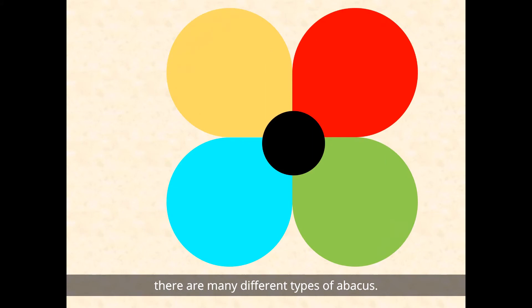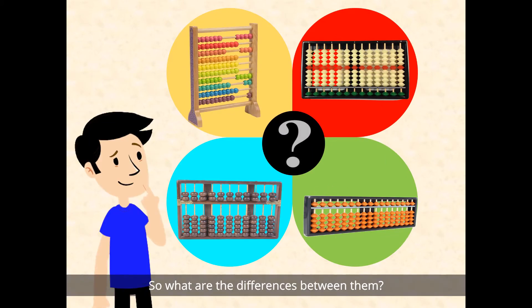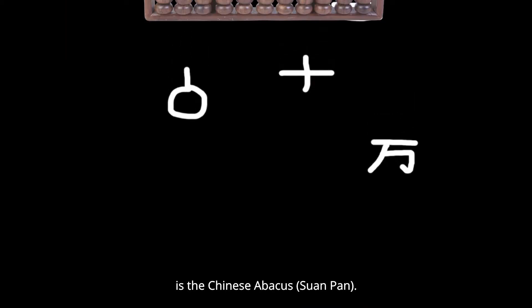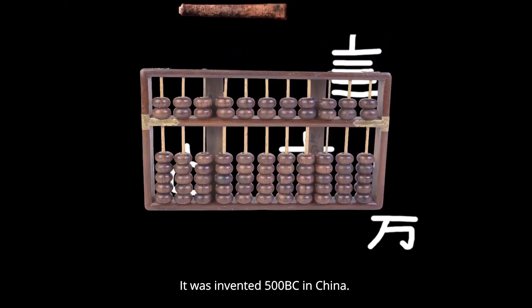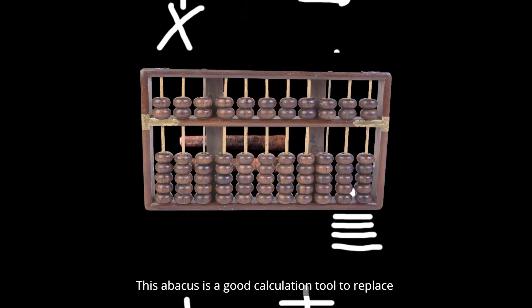And as you may have realized, there are many different types of abacus. So what are the differences between them? The earliest type of abacus is the Chinese abacus. It was invented 500 BC in China.